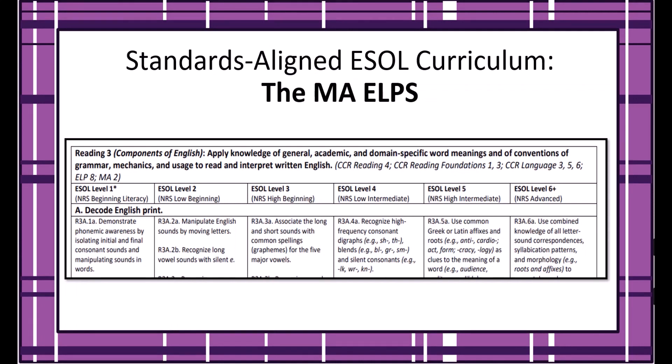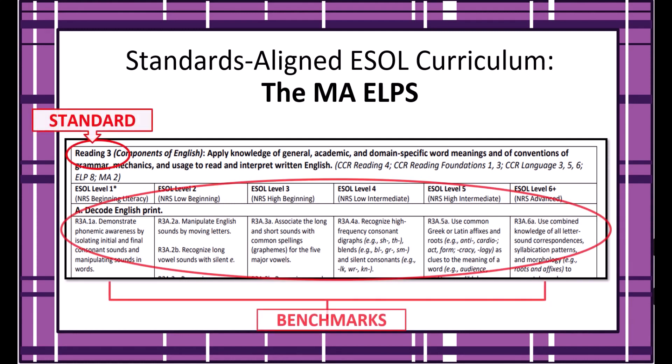For adult ESOL programs in Massachusetts, all curriculum and instruction must be aligned to the Massachusetts English Language Proficiency Standards or the MASS ELPS. The MASS ELPS include standards and benchmarks for six levels of ESOL in reading, writing, and speaking and listening, as well as the standards for navigating systems and civics. The MASS ELPS integrate college and career readiness with language skills to ensure that ESOL practitioners are all on the same page in terms of providing rigorous language instruction for all learners at every proficiency level.